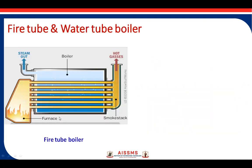This picture shows how a fire tube boiler works. As the name indicates, fire flows inside the tube and water is circulated externally around the tube. Due to the flue gases, water inside the drum is converted into steam, which is then passed out for different purposes — maybe for industrial use or power generation. Remaining flue gases can be recirculated to take advantage of the heating effect.